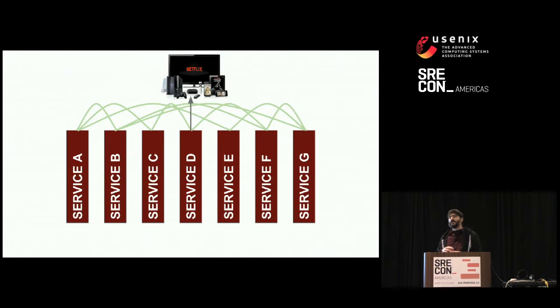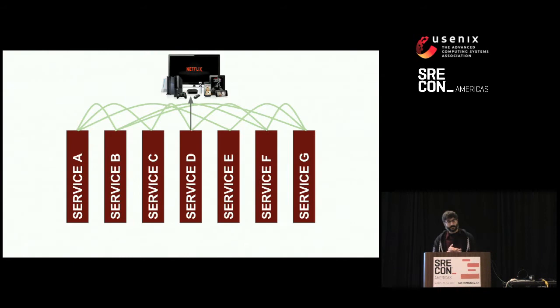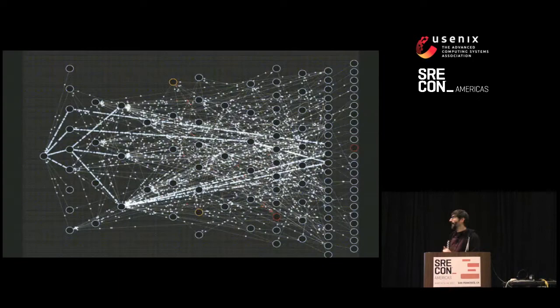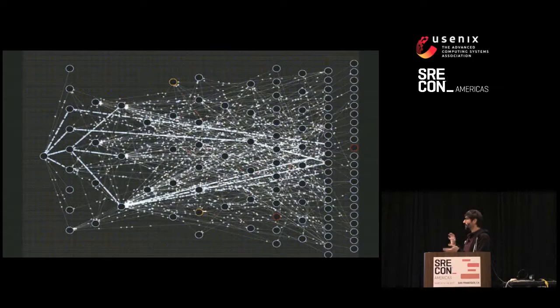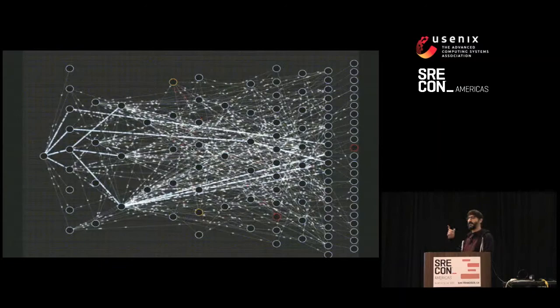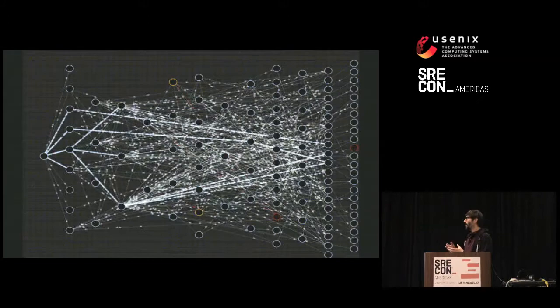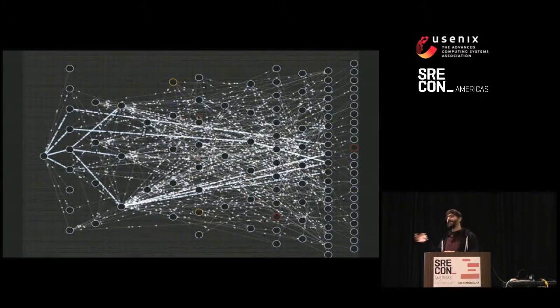One interesting thing to note is all those lines between the microservices can get a little bit messy. And in fact, I lied — we have more than seven microservices. Here's a visualization of just some of the microservices in the streaming path. There's request traffic coming in on the left and the streaming requests fanning out to different microservices. This is a small fraction — we actually have hundreds of microservices.